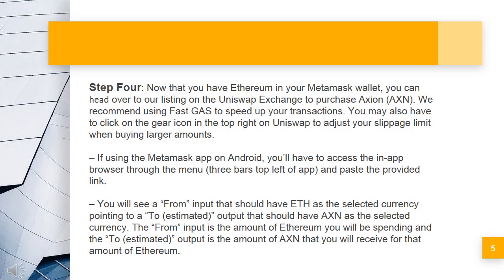Step 4: Now that you have Ethereum in your Metamask wallet, you can head over to our listing on the Uniswap exchange to purchase Axion. We recommend using FastGas to speed up your transactions. You may also have to click on the gear icon in the top right on Uniswap to adjust your slippage limit when buying larger amounts. If using the Metamask app on Android, you'll have to access the in-app browser through the menu — 3 bars top left of app — and paste the provided link. You will see a 'from' input that should have ETH as the selected currency, pointing to an estimated output that should have AXN as the selected currency. The 'from' input is the amount of Ethereum you will be spending, and the estimated output is the amount of AXN that you will receive for that amount of Ethereum.